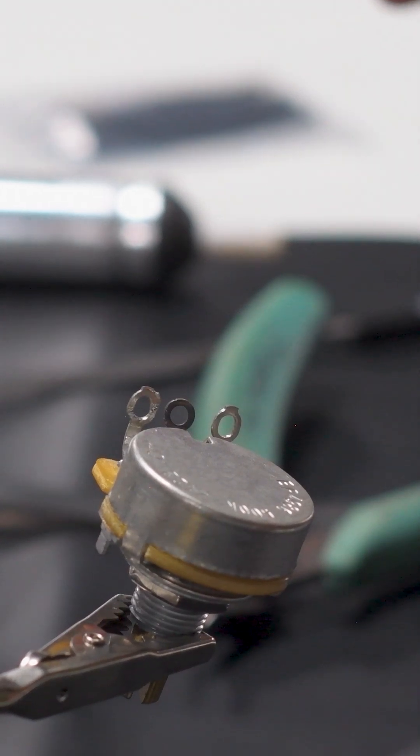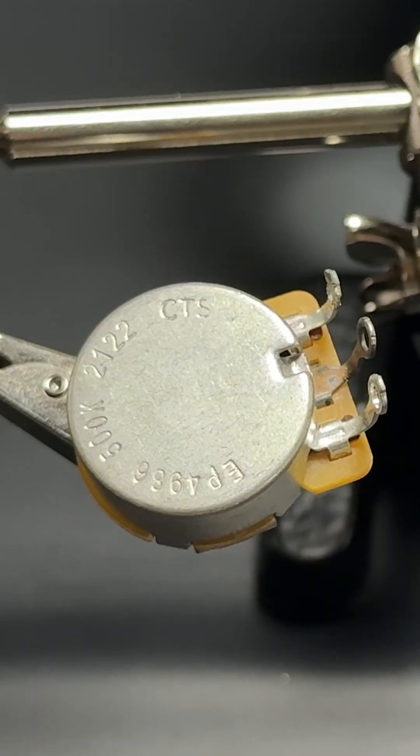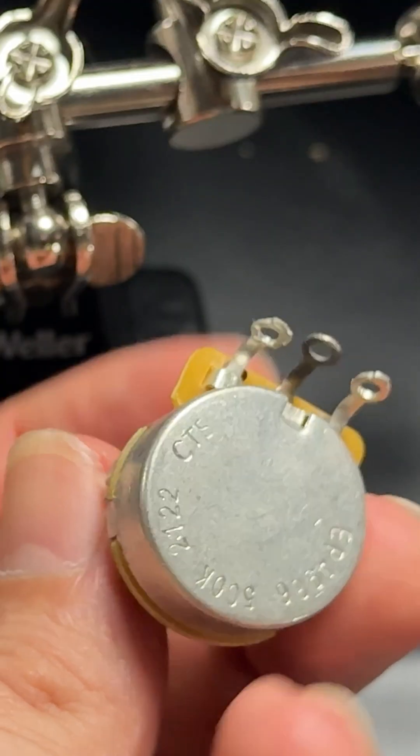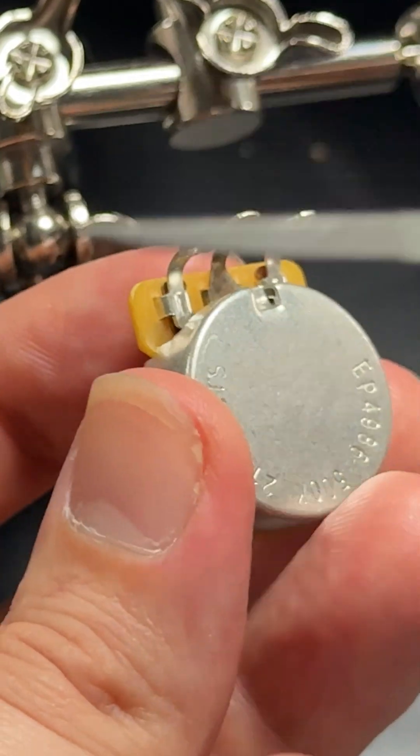Potentiometers have a protective layer on their casing that needs to be filed off in order to have better adhesion. I'll be using a small needle file to scrape off that protective layer.